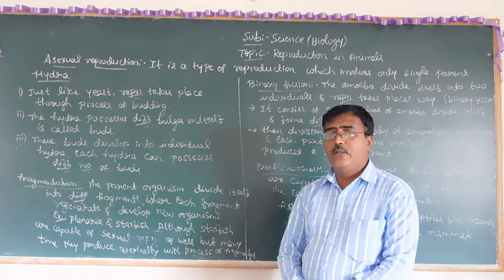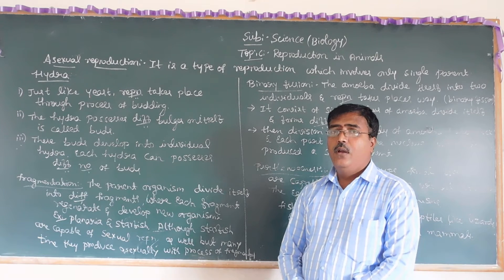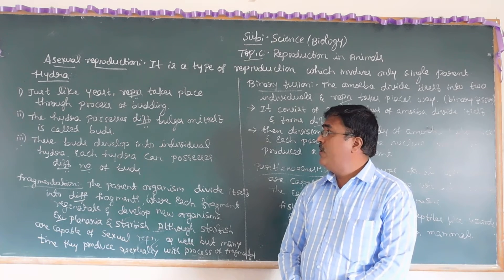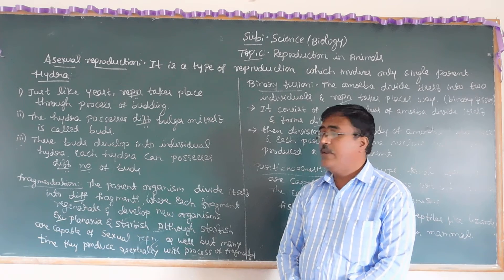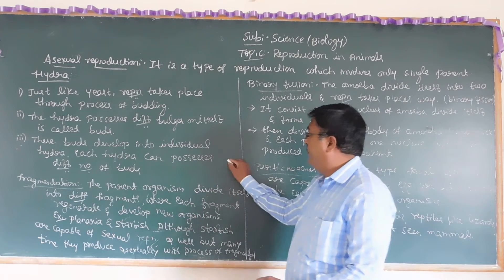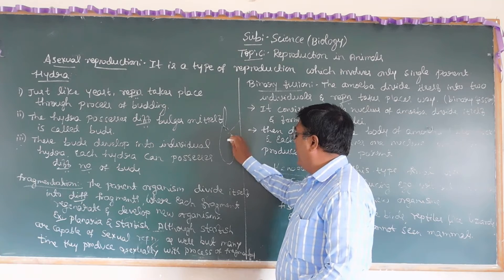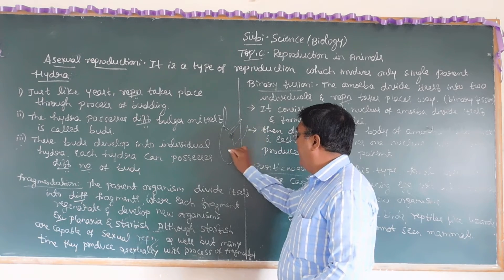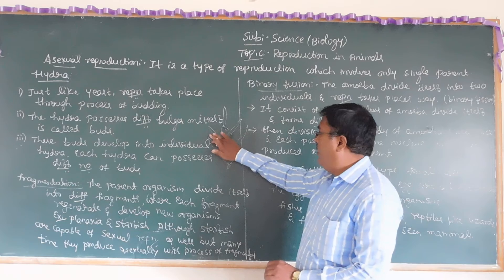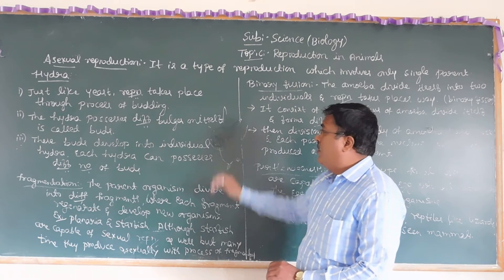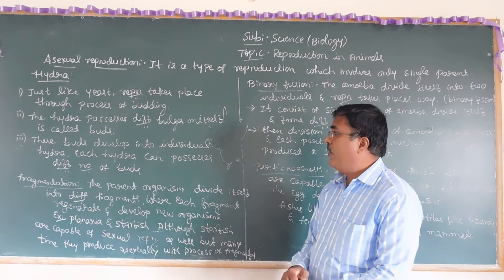One method of asexual reproduction is budding. In yeast, reproduction takes place through the budding process. In higher forms like Hydra, different buds form on the surface, and tentacle-type formations with buds can be observed.